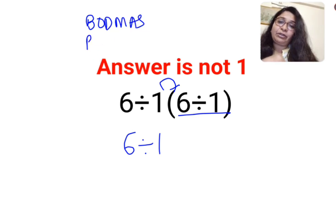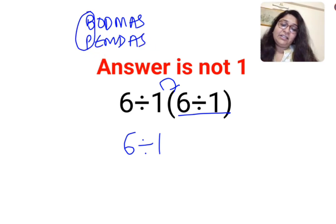We need to solve the brackets. 6 divided by 1 is 6, and there is no sign between this 1 and the bracket, which means it is multiplication.